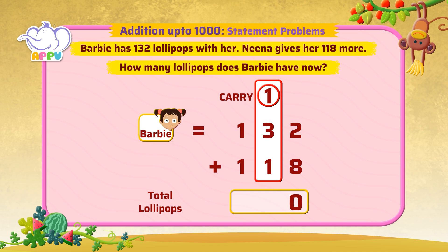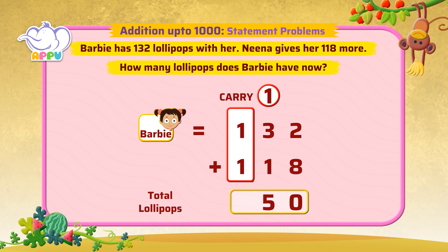For the 10's place, we add 1 which is carried over, with 3 and 1, and it is equal to 5. So 5 is the 10's place of the answer. We now add the 100's place. 1 plus 1 is equal to 2. 2 is the 100's place of the answer.